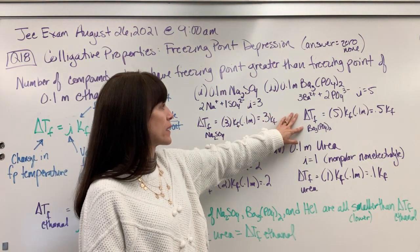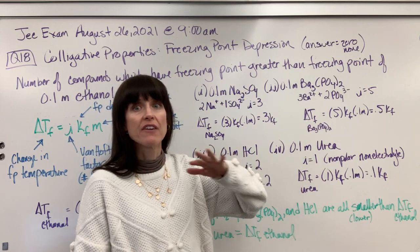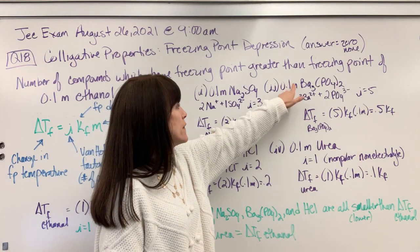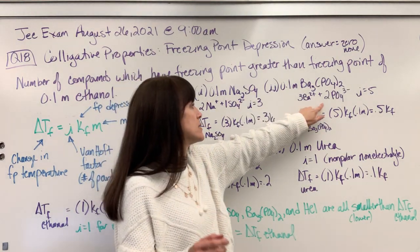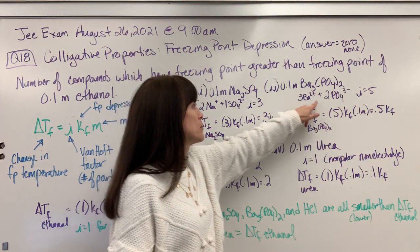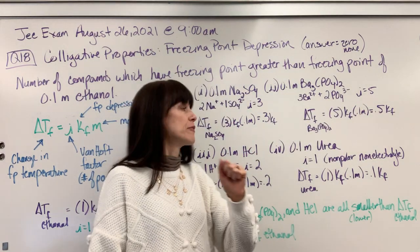Here we've got our barium phosphate. It has five particles. Look at this. The barium breaks into three barium ions and two phosphate ions. Three plus two, five particles.